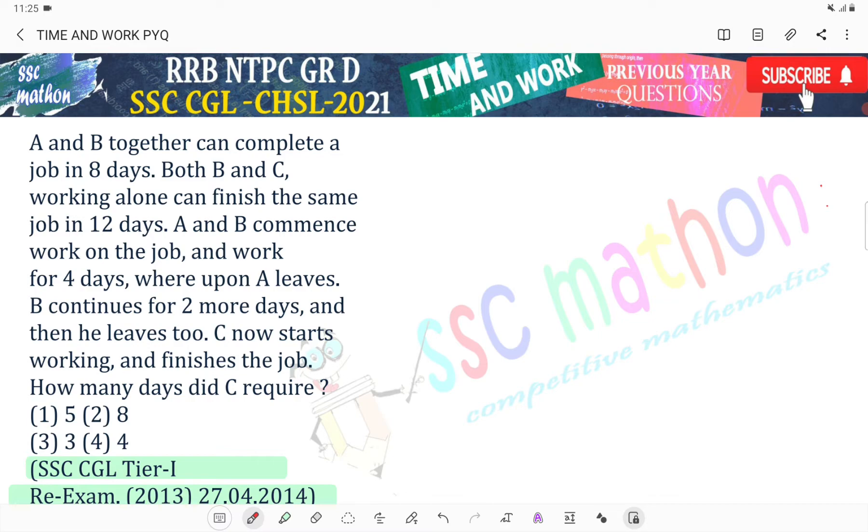A and B together can complete a job in 8 days. Both B and C working alone can finish the same work in 12 days. A and B commence the work on the job and work for 4 days whereupon A leaves. B continues for 2 more days and then he leaves too. C now starts working and finishes the job. How many days did C require?